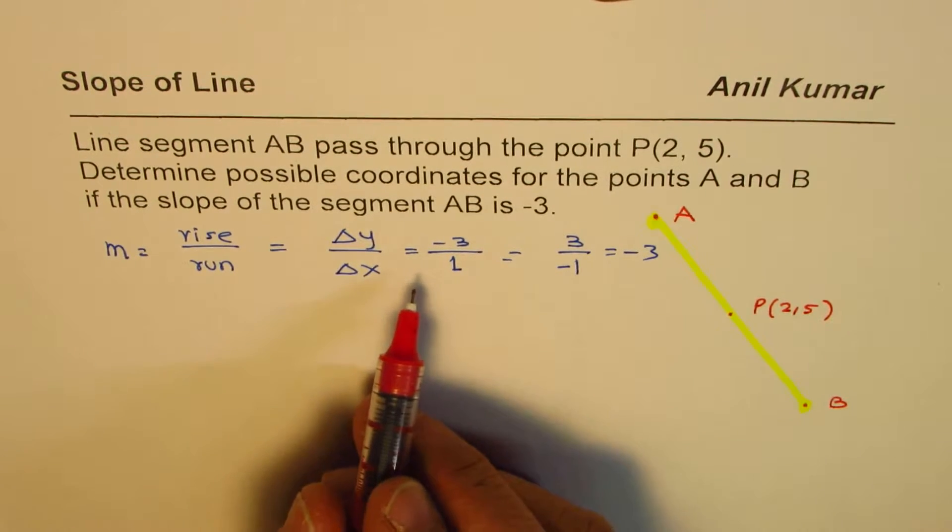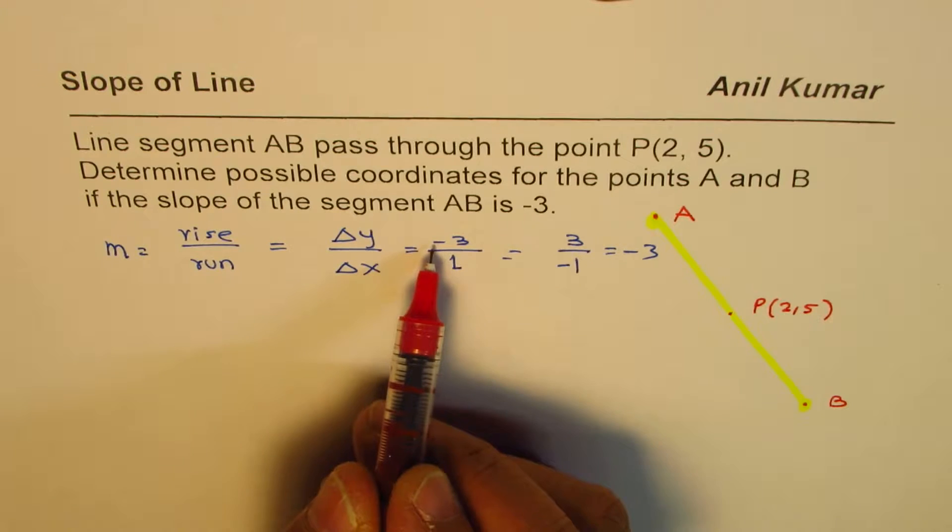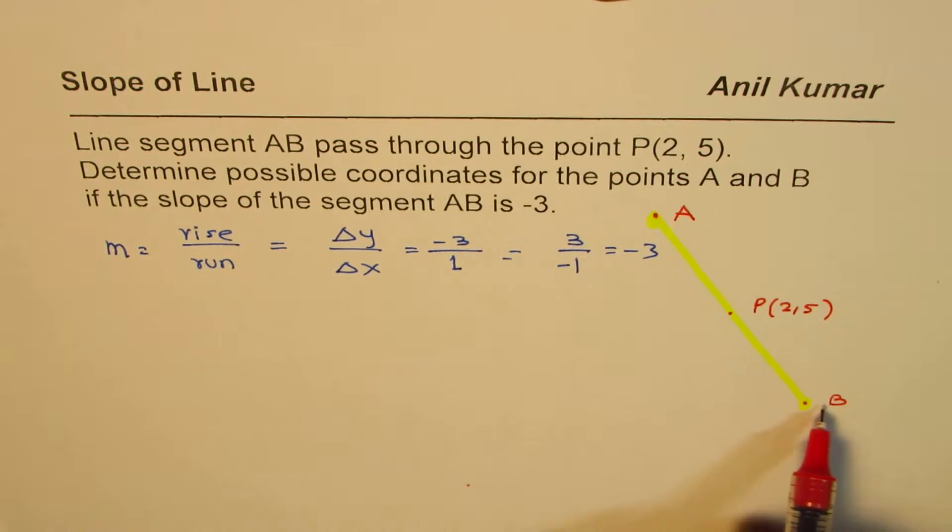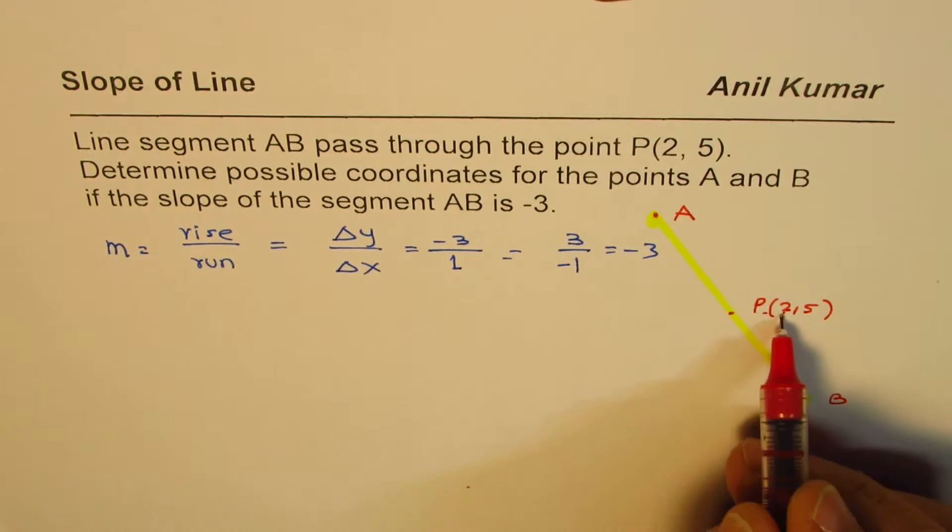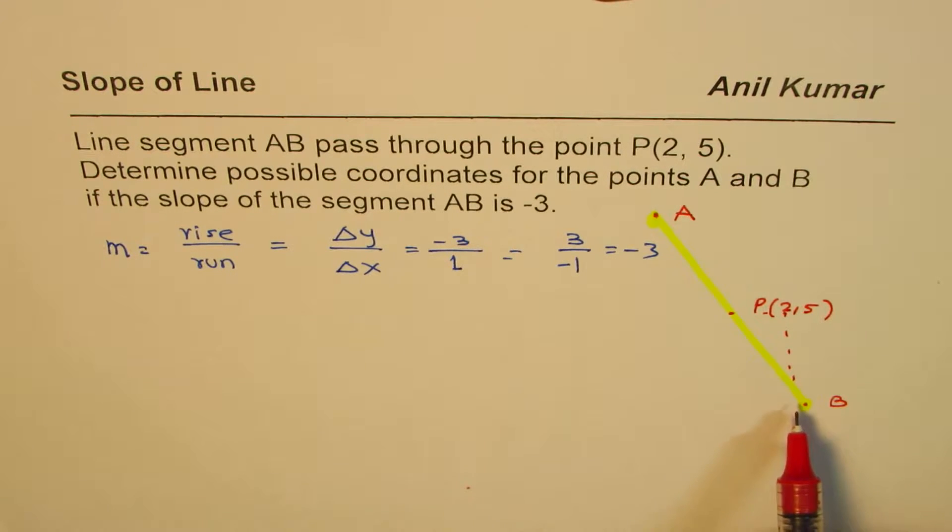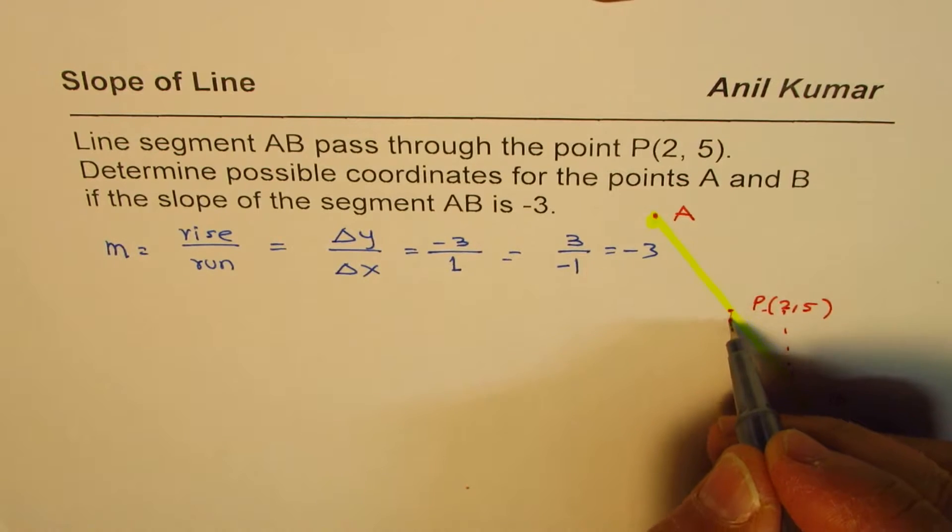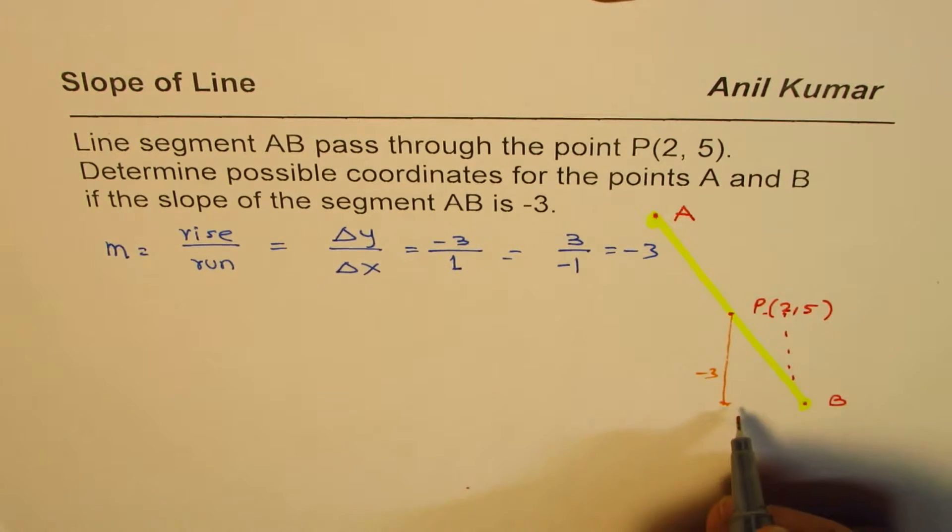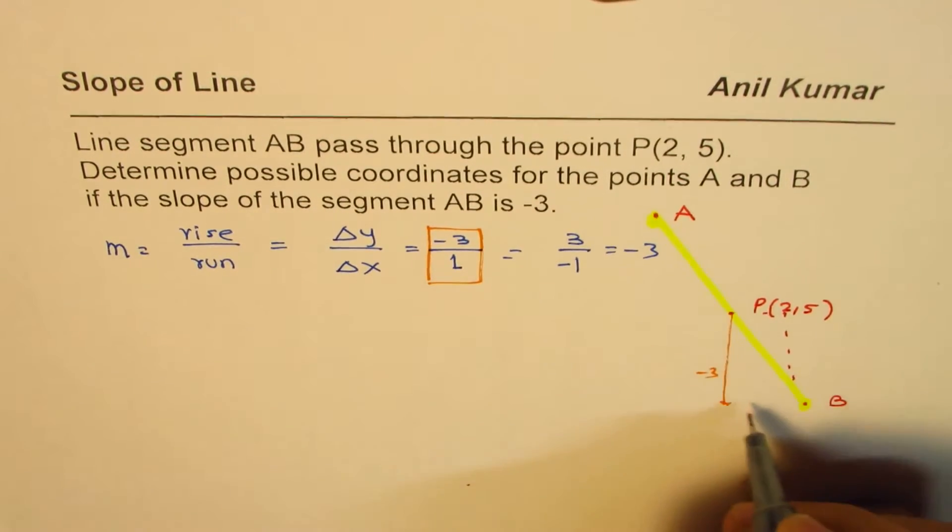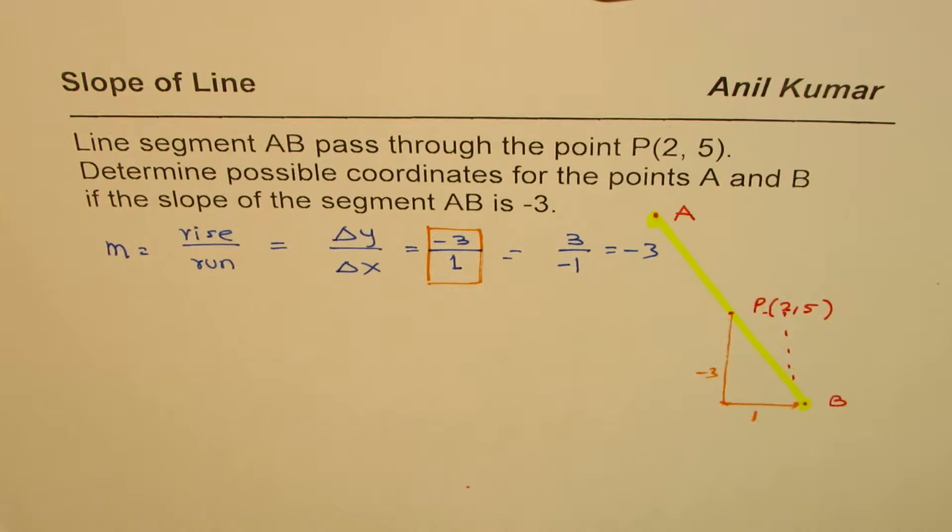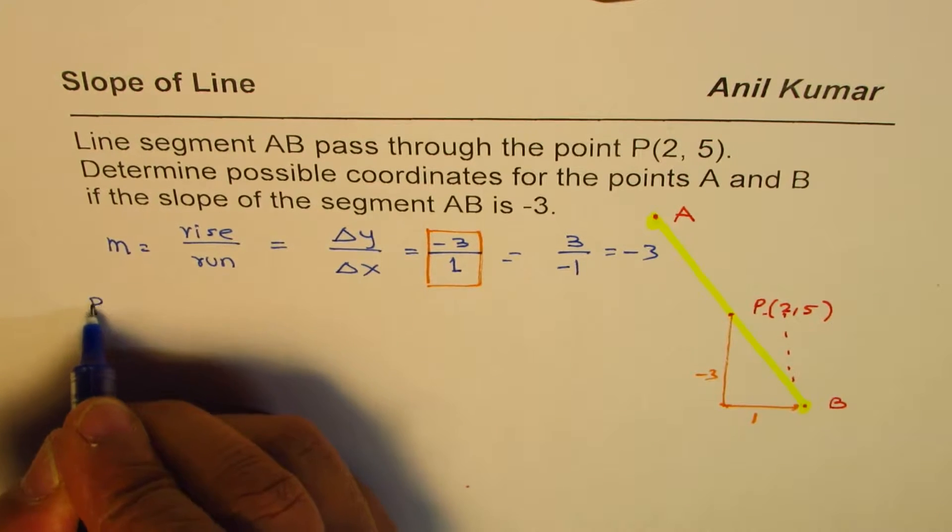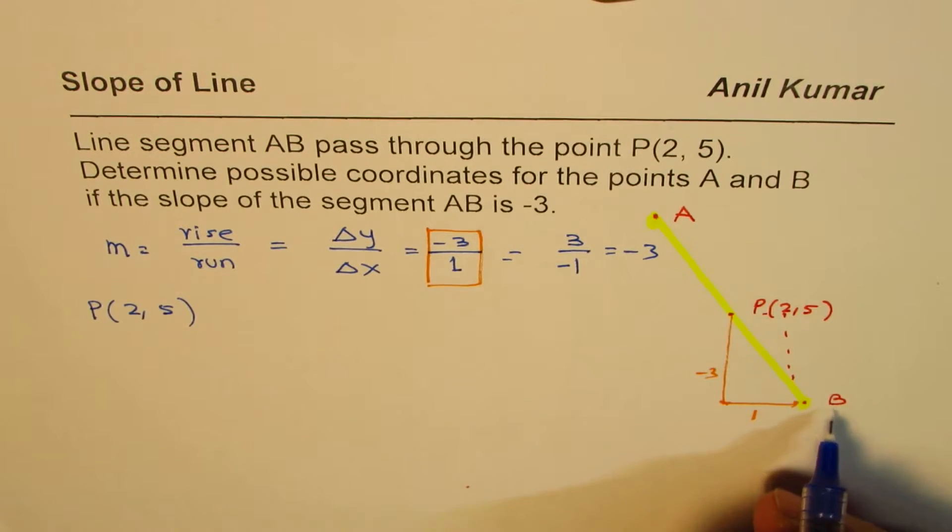How do we use this equation? For point 1, let's take -3/1. That means go down 3 units and right one unit. So we can find point B by going right and down. So -3 is going down by 3 units, and we are going right by 1 unit. If you look at the diagram, we have point P which is (2, 5). Then, what should be the coordinate of B?